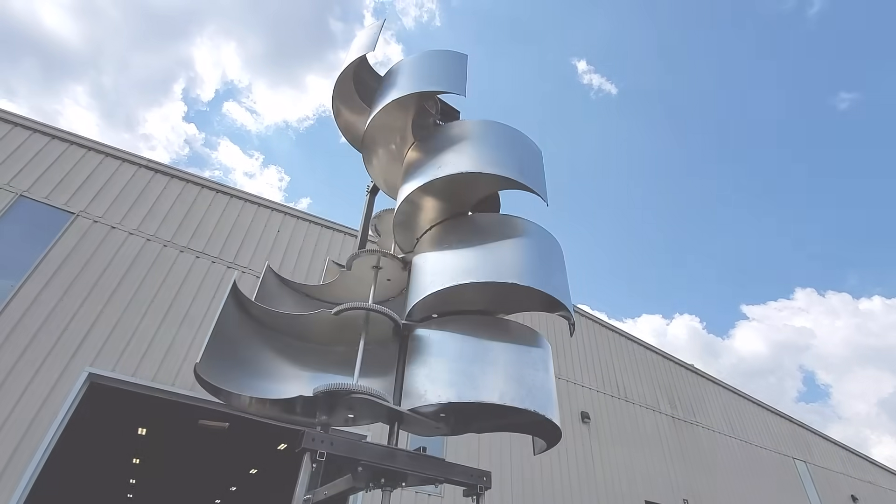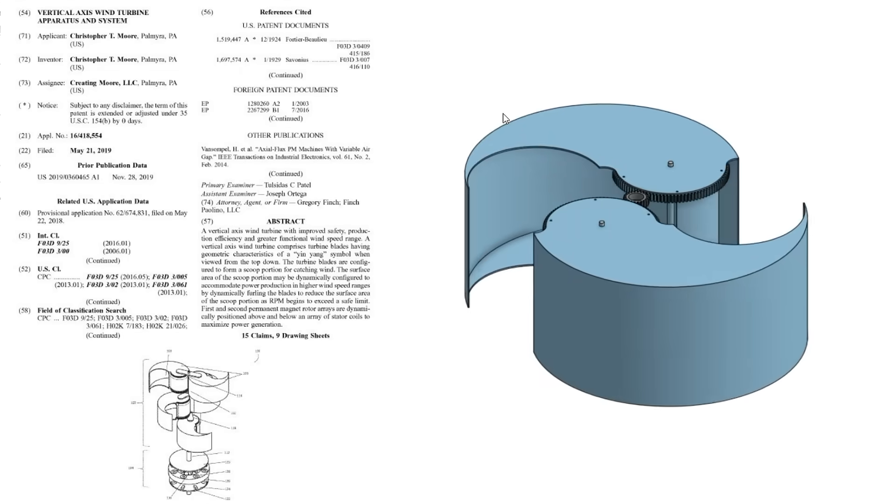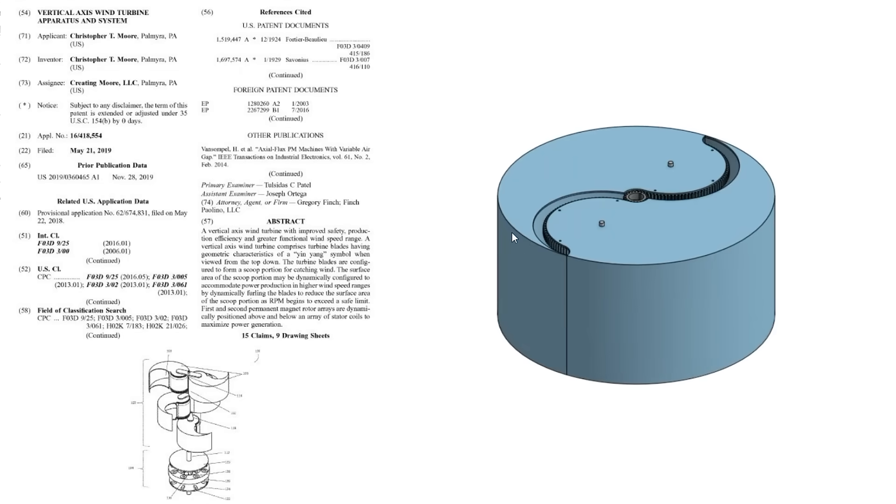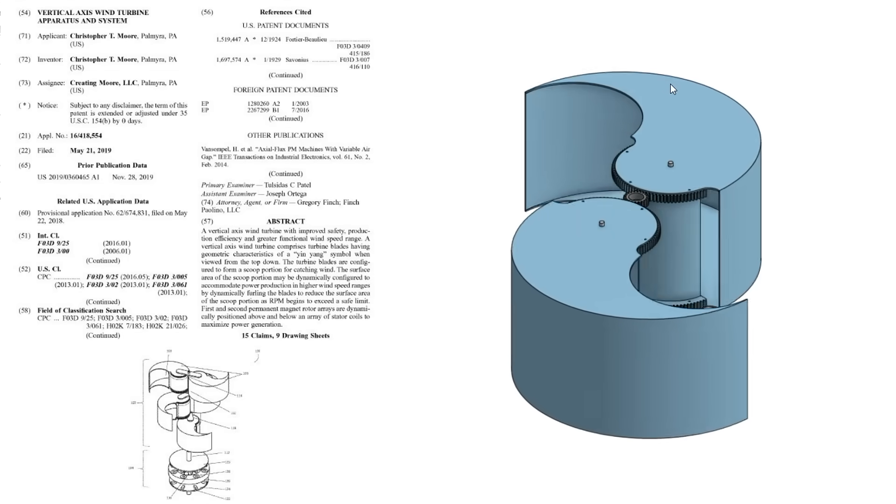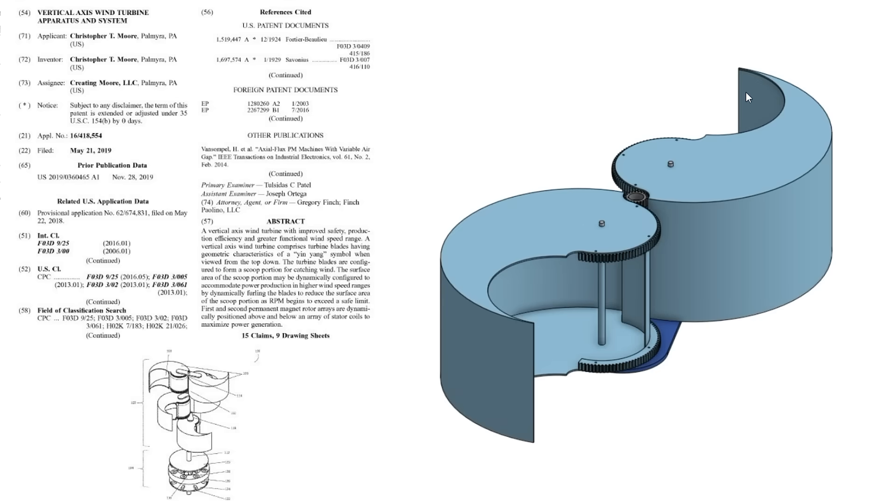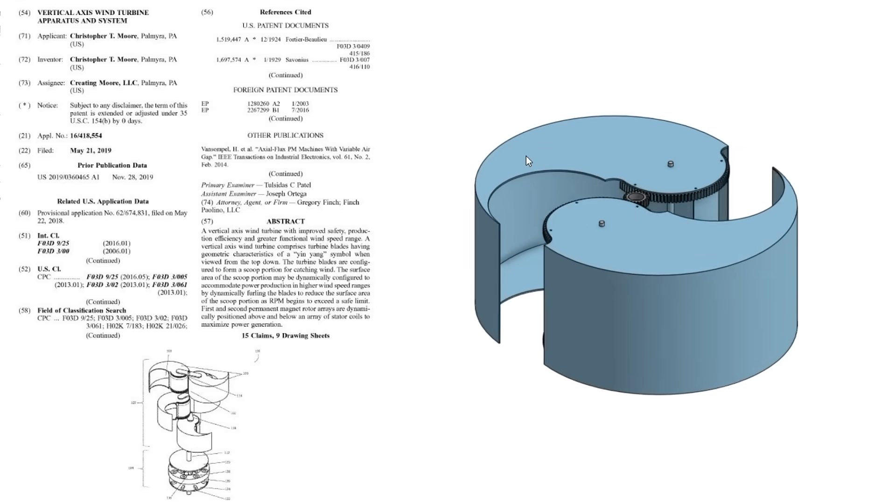What makes Harmony Turbine so special is our patented furling technology that allows our units to automatically furl or close to whatever degree necessary during severe winds, while still producing full power the entire time.